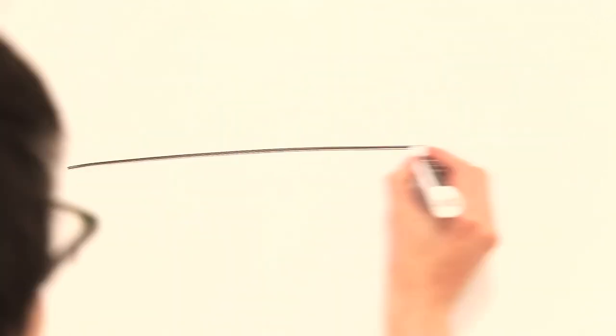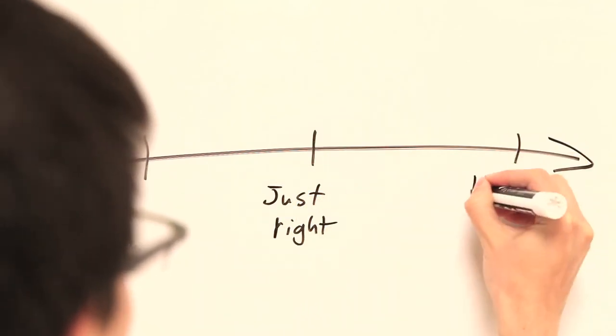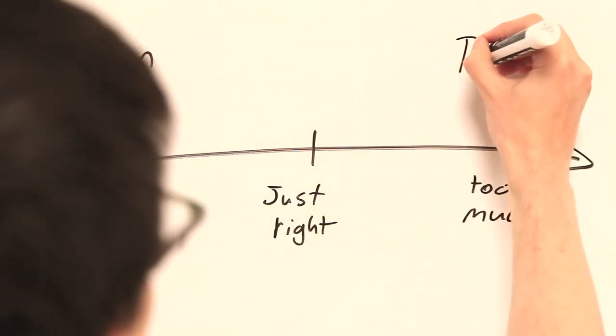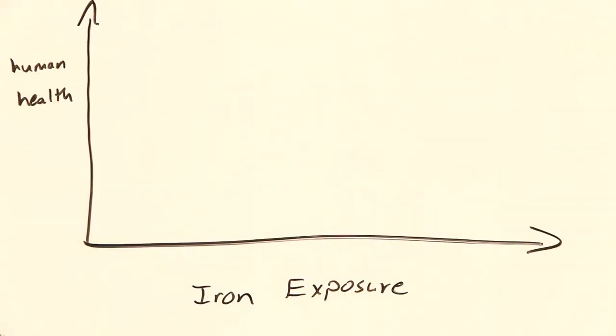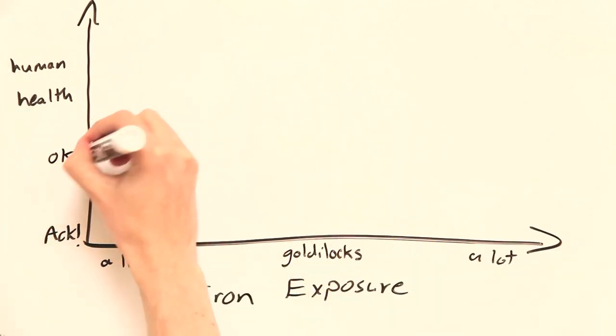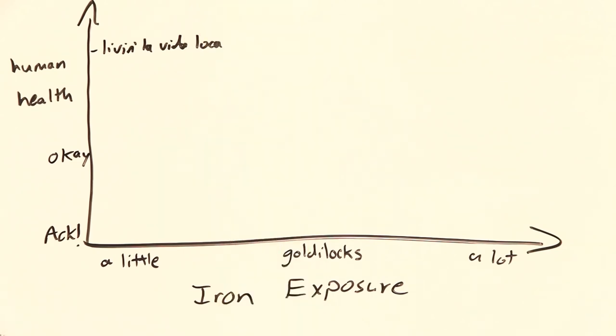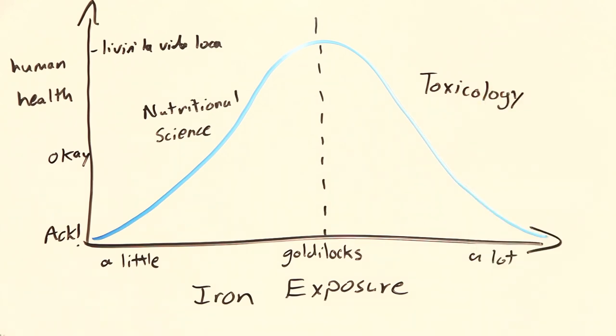But how much is too much? And how little is too little? These are the questions asked and answered by the toxicological and nutritional sciences respectively. Both fields are concerned with the amount of an exposure that a person can tolerate without losing homeostasis. They just approach the problem from opposite directions. Toxicologists tend to look at maximum values, how much of something a person can be exposed to without suffering a negative consequence, while nutritionists tend to look at minimum values, how much of something does a person need to be exposed to to avoid suffering a negative effect. It's two sides of the same coin.